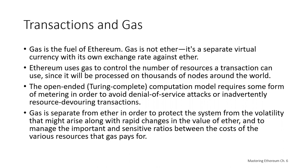Since transactions run in parallel on thousands of computers worldwide, Ethereum's Turing-complete open-ended computation model requires metering to prevent infinite loops, denial of service attacks, or excessive resource consumption. Gas is separate from ether to protect the system from volatility arising from rapid changes in ether's value, and to manage the cost ratios between computation, memory, and storage. There's been significant controversy around gas prices recently, and there have been changes to how gas functions with more changes expected.